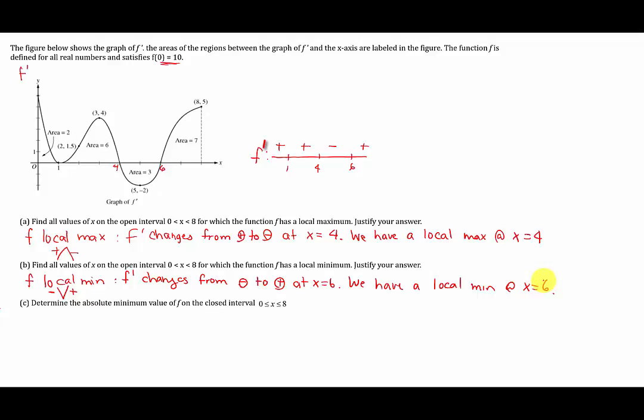Now this last part is asking us to find the absolute minimum. Remember, when we do absolutes, we must check critical numbers and endpoints. That's so important. In this case, since we're looking for an absolute minimum, we only need to check our local min and our endpoints. It's pretty obvious that we wouldn't need to check our local max to find an absolute min. So our local min is going to be to check f of 6, and then our endpoints are going to be to check f of 0 and f of 8.